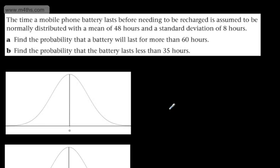This is the third video looking at real-world applications of the normal distribution. We're told the time a mobile phone battery lasts before needing to be recharged is assumed to be normally distributed with a mean of 48 hours and a standard deviation of 8 hours.